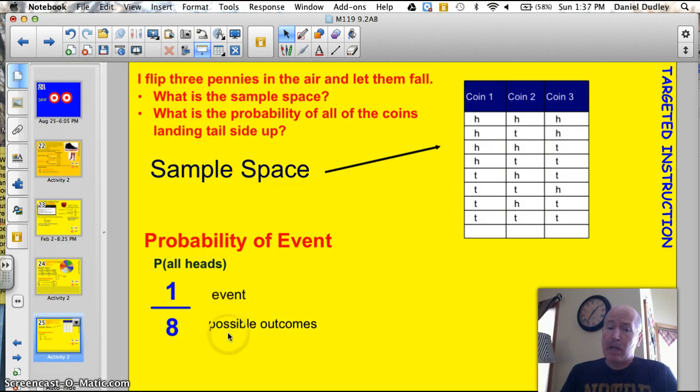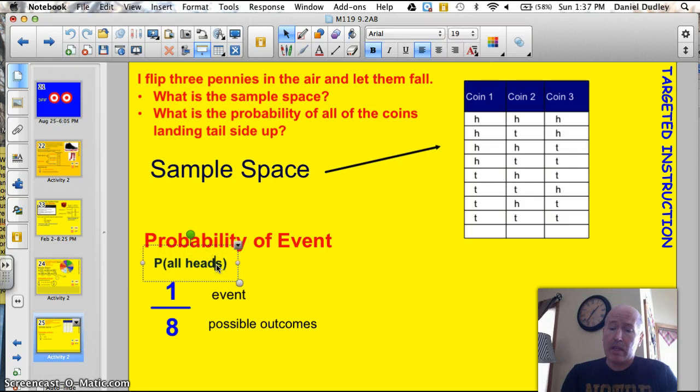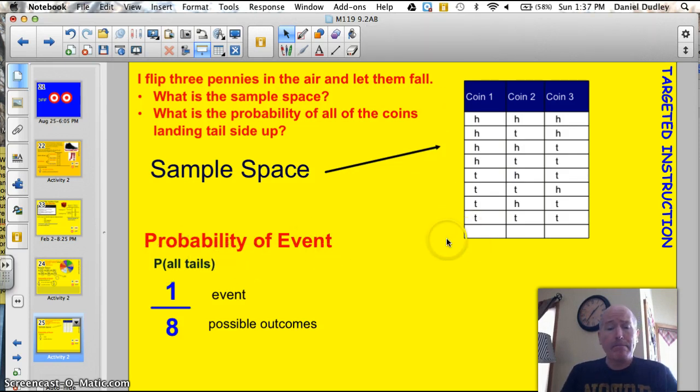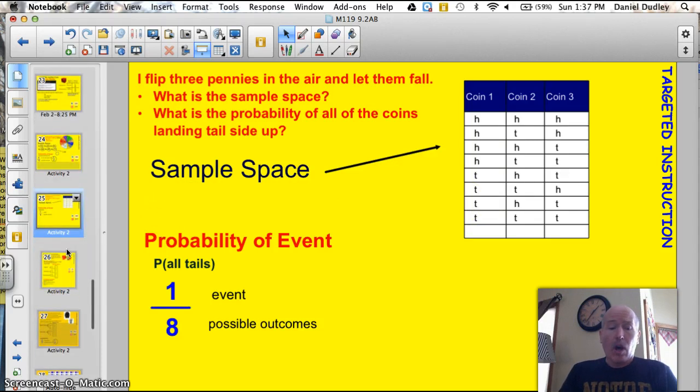So, my possible outcomes are 8. The chances of getting all tails is 1. So, the probability of getting all tails is 1 in 8. That is in simplest form so, I don't have to reduce it anymore. Sample space. All of these things listed. So, if I had to list that on the test, I'd just list HHH, HTH, or I'd put a little arrow going over just like I did. Here's my sample space. Here's my list of events.